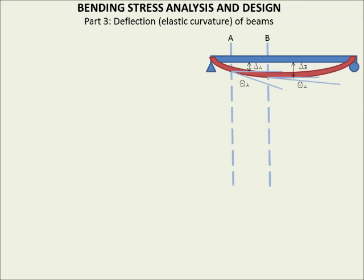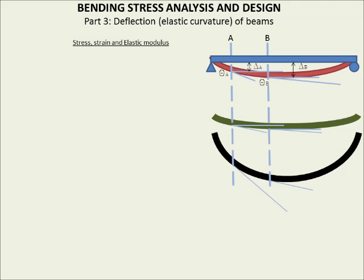We can also talk about the rotation — measured from the horizontal to its new tangential line — giving us theta A at point A and theta B at point B. We can also talk about the rate of change of rotation, in other words the rate of change of the slope. You could have a gradually changing slope as in the green beam, or a rapidly changing slope as in the black beam. The problem is how do we put these into mathematical formulations and make predictions about how much deformation — measured in delta, theta, or the rate of change of slope — results from a given moment.